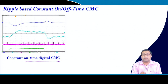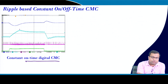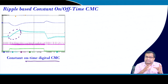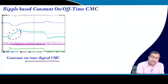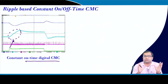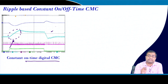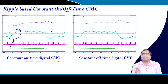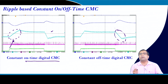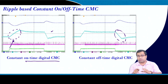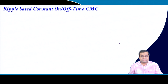Experimental results: constant on-time digital current mode control requires a minimum off-time. Traditional constant on-time control suffers from poor step-up transient performance (penalized) but excellent step-down transient. Conversely, constant off-time control gives very nice step-up performance but the step-down is penalized because a minimum on-time is needed. Without these minimum time constraints the converter will collapse.